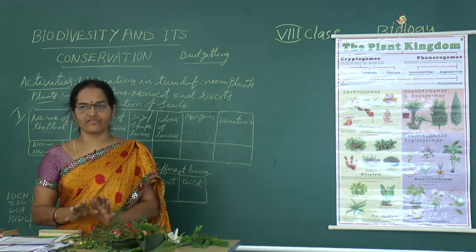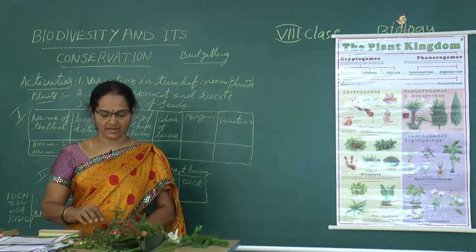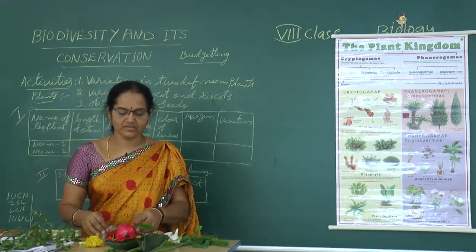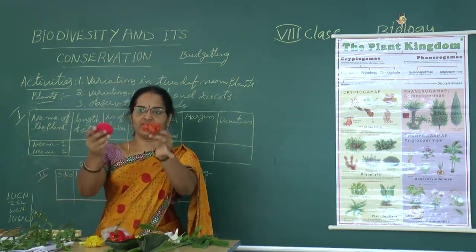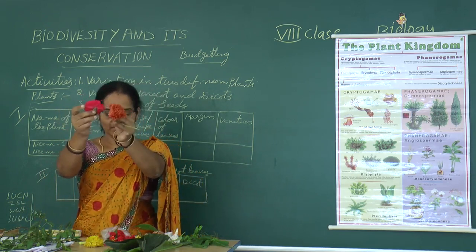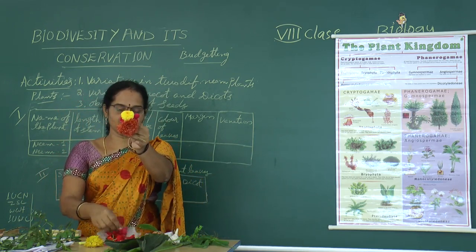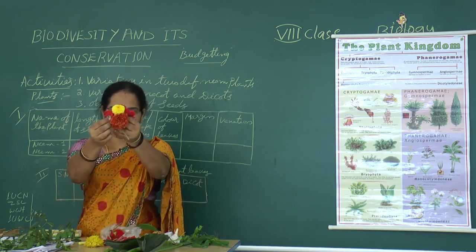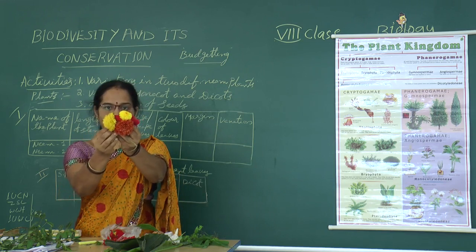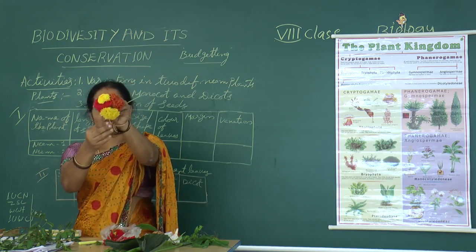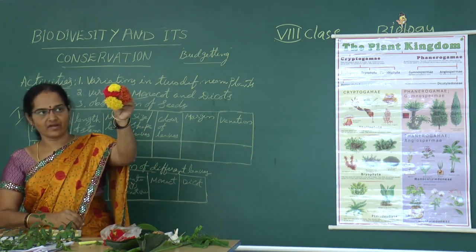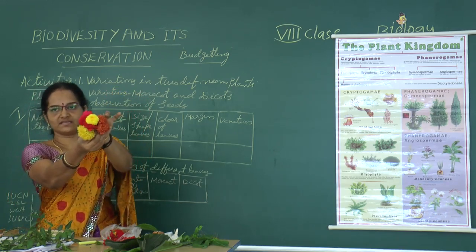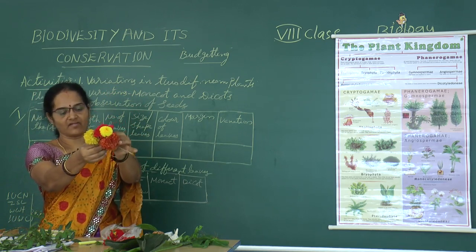Children, now you are familiar with the word biodiversity. Let us see some examples. Look at the flowers — do all flowers have the same color, shape, size, texture, number of petals, and arrangement of sepals? The differences among these organisms are called variations.